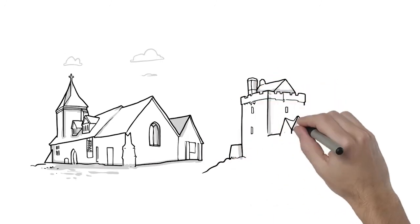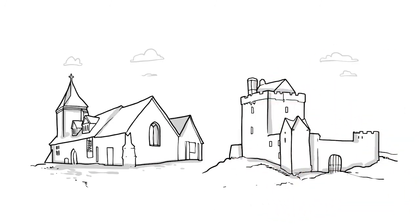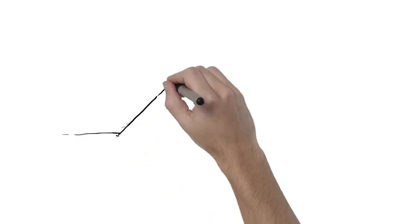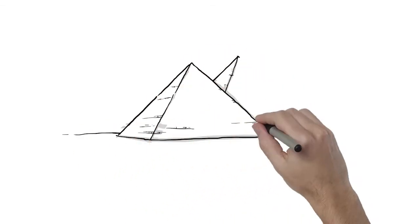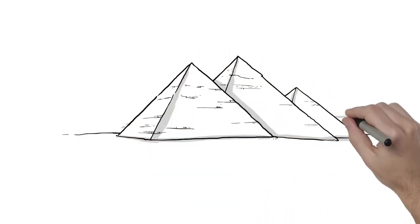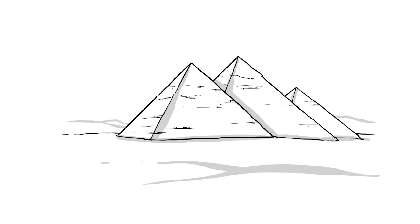Think of churches and castles in Europe that date back to the Middle Ages. Heck, even the pyramids in Egypt are made of masonry. They've lasted for over 4,000 years.